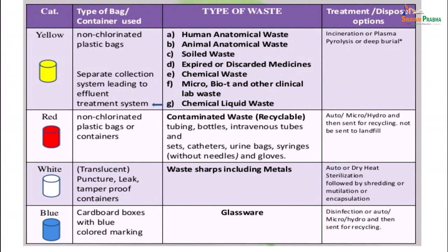The yellow category uses a non-chlorinated plastic bag to collect human anatomical waste, animal anatomical waste, soiled waste, expired or discarded medicines, chemical waste, micro-bio and other clinical waste, and chemical liquid waste. Chemical liquid waste specially needs to go to a separate sewage and effluent treatment system. The rest collected in the yellow bag needs to be incinerated, plasma pyrolysis done, or deep burial performed.